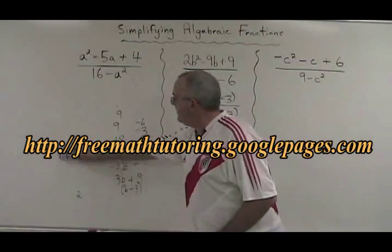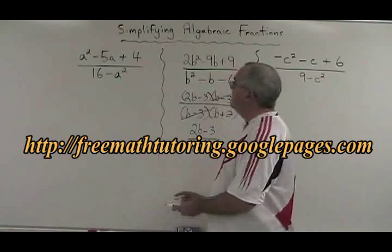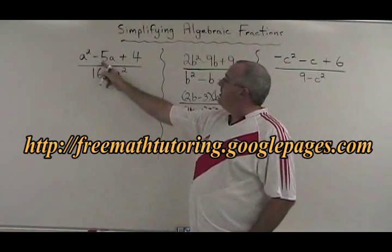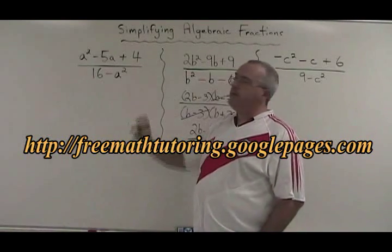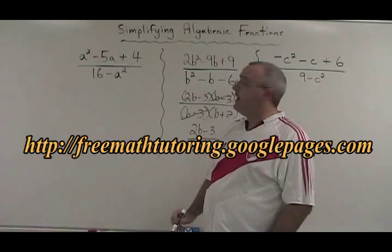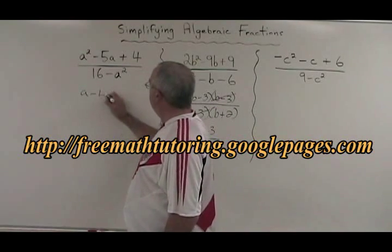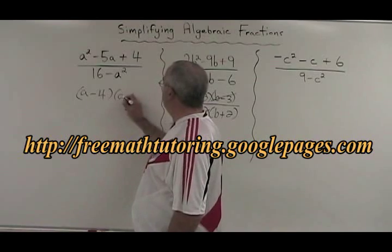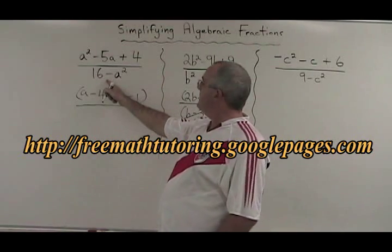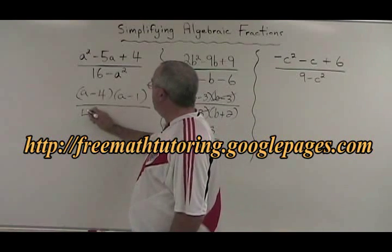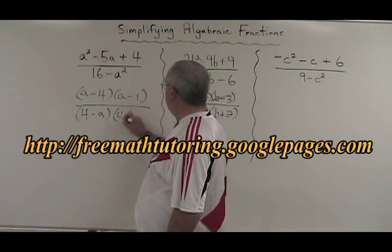Let's move on to this example over here. What two numbers multiply to give 4 and add to give negative 5? That would be negative 4 and negative 1. Our numerator is A minus 4 times A minus 1. Factoring the difference of squares in the denominator, we get 4 minus A times 4 plus A.